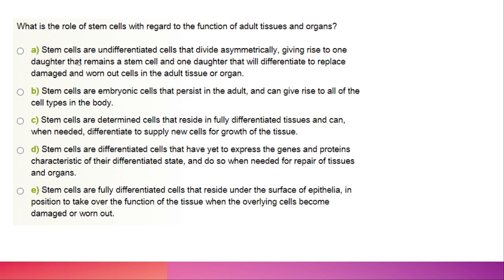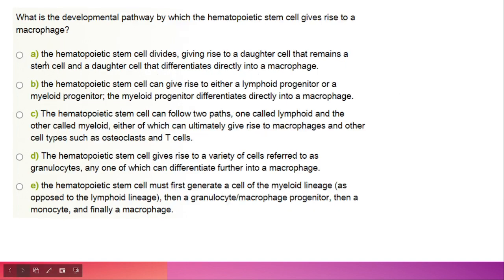What is the role of stem cells with regard to adult tissue and organs? Stem cells are undifferentiated cells that divide asymmetrically. The option that stem cells are embryonic cells that persist in the adult and give rise to all cell types is false. Adult stem cells can be developed into specialized cell types. Stem cells are not determined cell types — they are undifferentiated. The correct option is A.